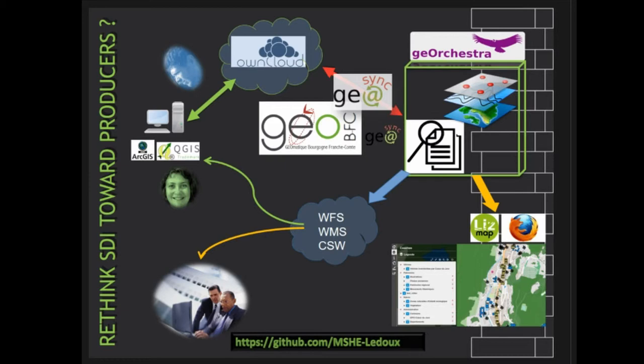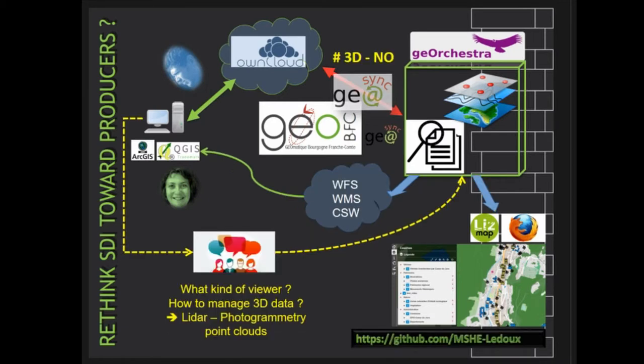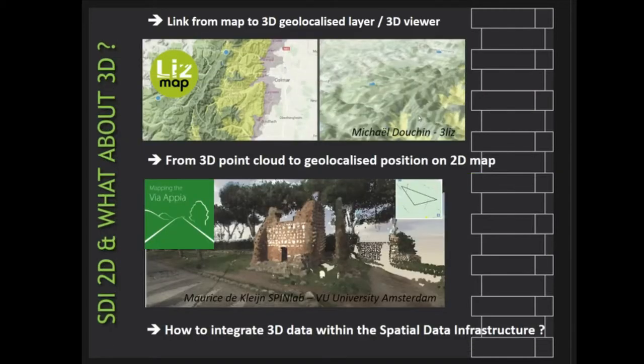Our GeoOrchestra spatial data infrastructure operates in a Docker environment, making it transferable. For more information, the project is available on GitHub. While the system works quite successfully, 3D data remains outside of the system, and this is still a problem for us — especially in archaeology.